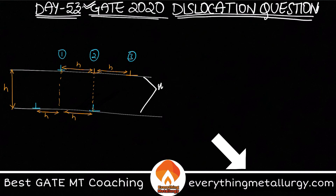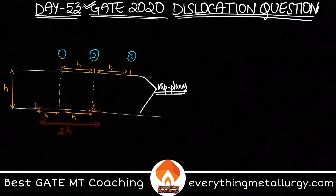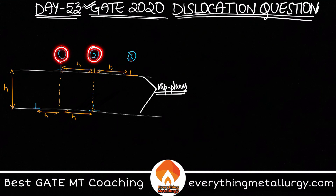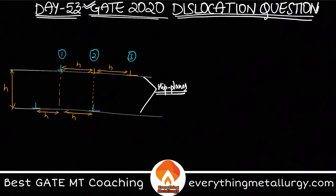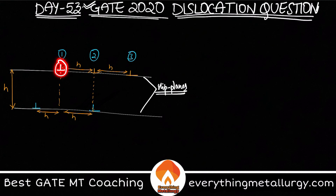You have two different slip planes with two dislocations on the bottom slip plane at a distance of 2h (h plus h). On the other slip plane, you have a dislocation that can glide along the slip plane. We have three positions — one, two, and three — and depending on the position, we have to determine if the equilibrium is stable or unstable.